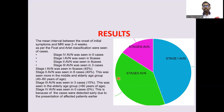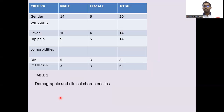Stage 1 and 2 were seen more in the middle and elderly age group. Stage 3 was seen in 3 patients in the elderly age group, those more than 60 years old. Stage 4 AVN was not seen in any cases, as cases were detected early due to earlier patient presentation. Gender-wise distribution: a total of 14 males and 6 females were included.